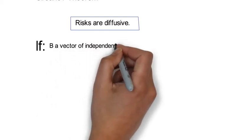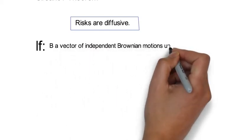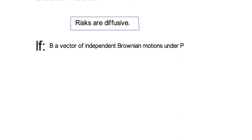Now Girsanov theorem states the following. If first, B is a vector of independent Brownian motions under the empirical probability measure P, and if second,